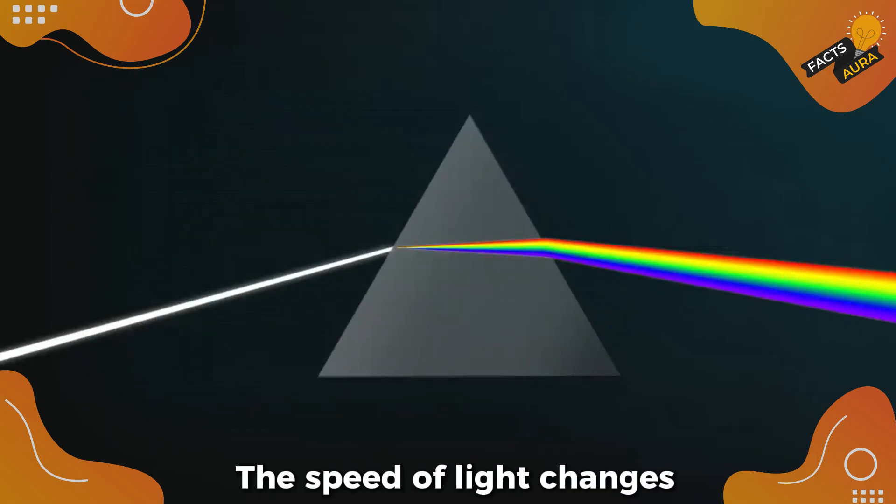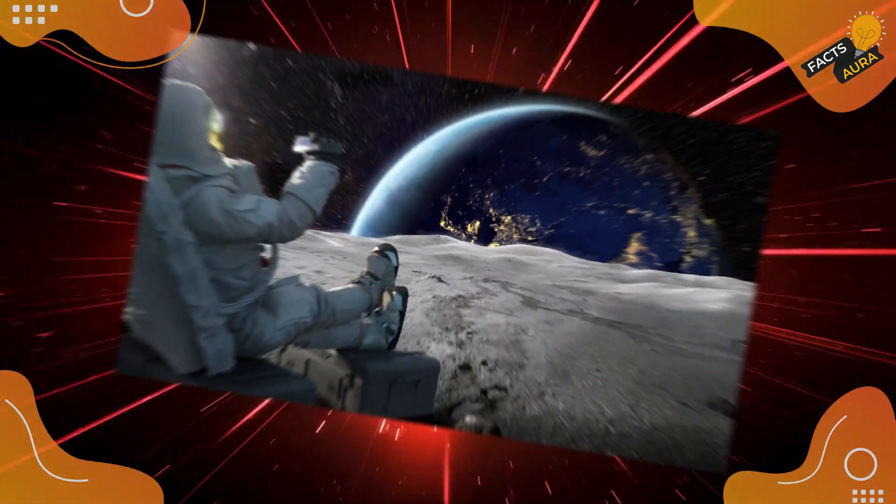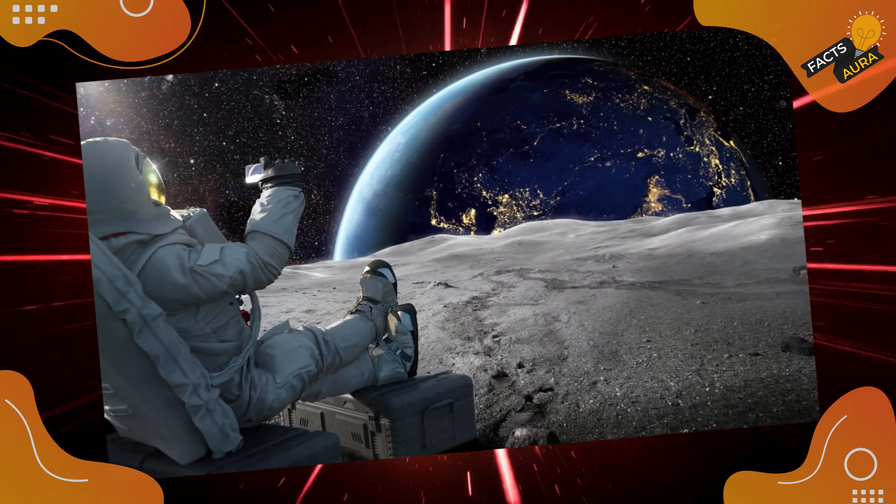The speed of light changes depending on what it's moving through. For example, light moves slower in water than in a vacuum. In space, however, light zips along at its maximum speed.